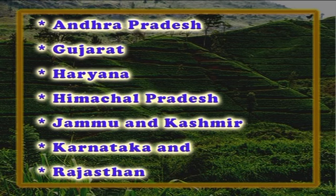The states where DDP is under implementation are Andhra Pradesh, Gujarat, Haryana, Himachal Pradesh, Jammu and Kashmir, Karnataka and Rajasthan.